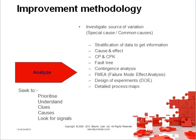The next stage of the DMAIC cycle is Analyze. Here, we're seeking to prioritize the things we should be looking at, understand better what the issues are based on the measurements taken, look for clues, look for causes, and look for signals of the areas we should be improving. Tools used in this phase include Cause and Effect diagrams, Fault Tree analysis, FMEA (Failure Mode and Effect Analysis), Design of Experiment, and detailed process maps.